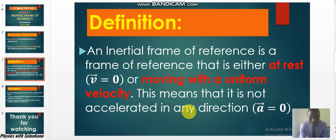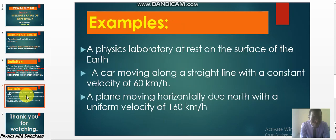Now what are the examples of an inertial frame of reference? Here are a few examples. A physics laboratory at rest on the surface of the Earth. We know that the physics lab is not moving. If I'm taking measurement in a physics lab, the lab is at rest, so if my coordinate is in the lab then it is an inertial frame of reference.